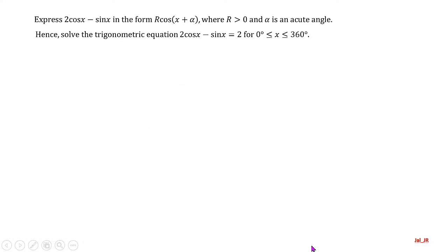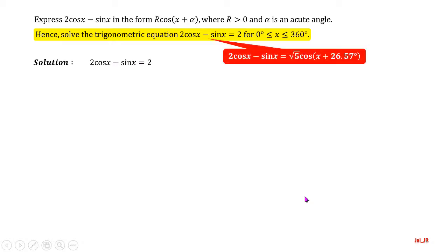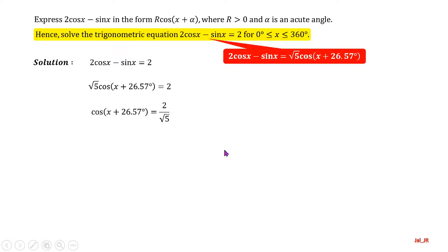Now we are going to solve the second part of the equation. We have expressed two trigonometric terms into a single trigonometric term, so we are going to use that result to solve the given equation. Now we have a basic trigonometric equation to be solved.